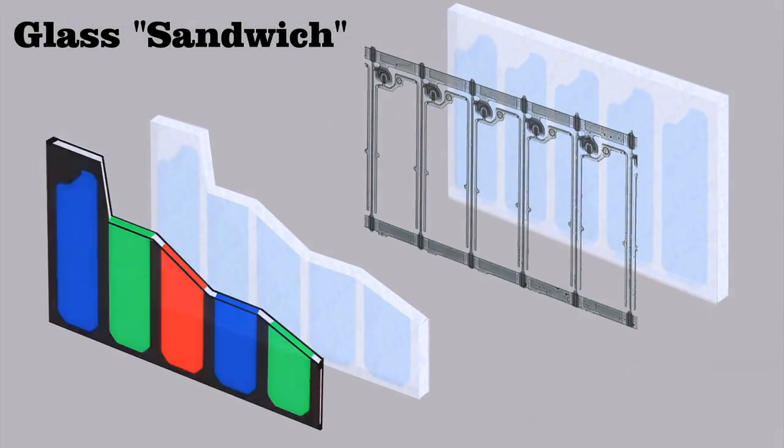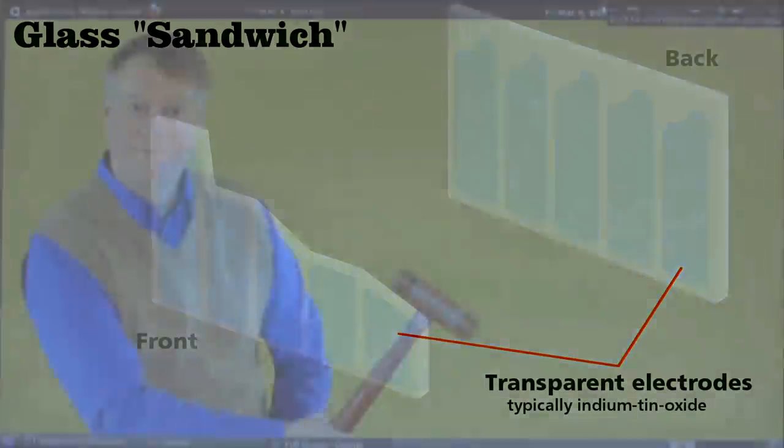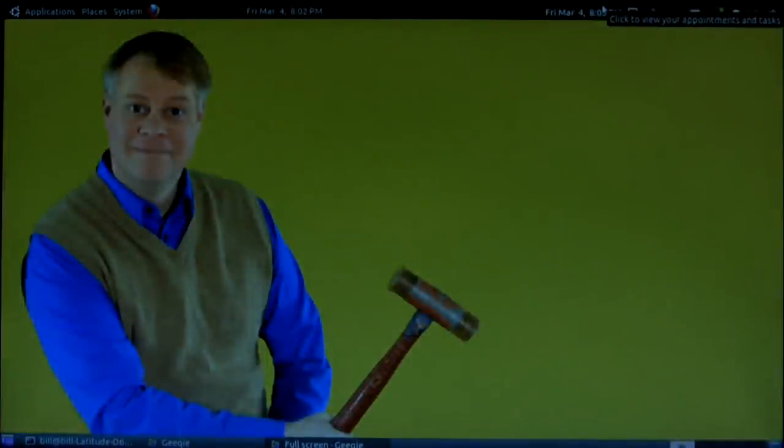By controlling the voltage between these transparent electrodes, we can control the intensity of the light that passes through. Now, there's much more to the glass plate.